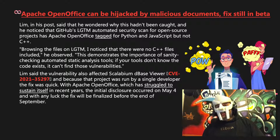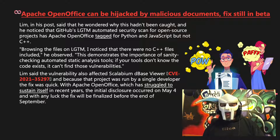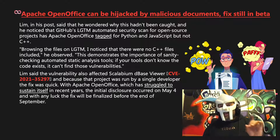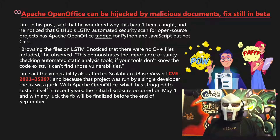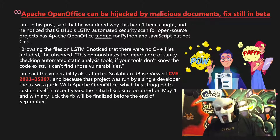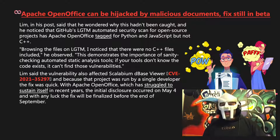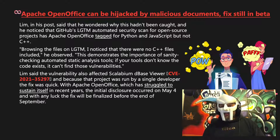Lim said that the vulnerability also affected Scalabium dBase Viewer, CVE-2021-35297, and because that project was run by a single developer, the fix was quick. With Apache OpenOffice, which has struggled to sustain itself in recent years, the initial disclosure occurred on May 4th, and with any luck the fix will be finalized before the end of September.